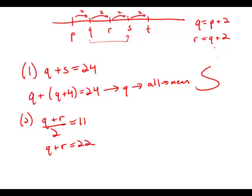And R, of course, is two bigger than Q. So Q plus Q plus two equals 22.